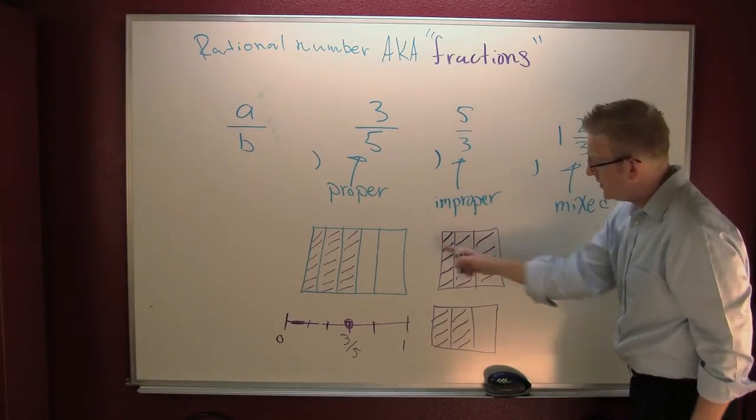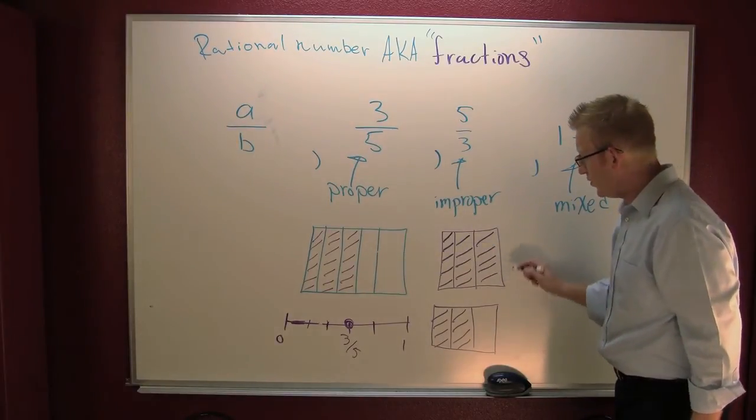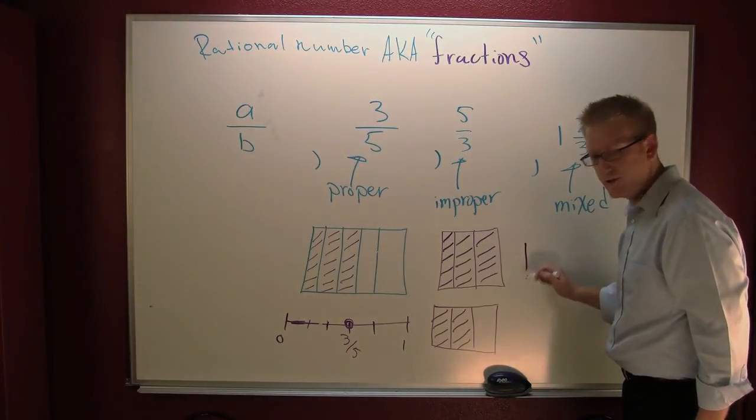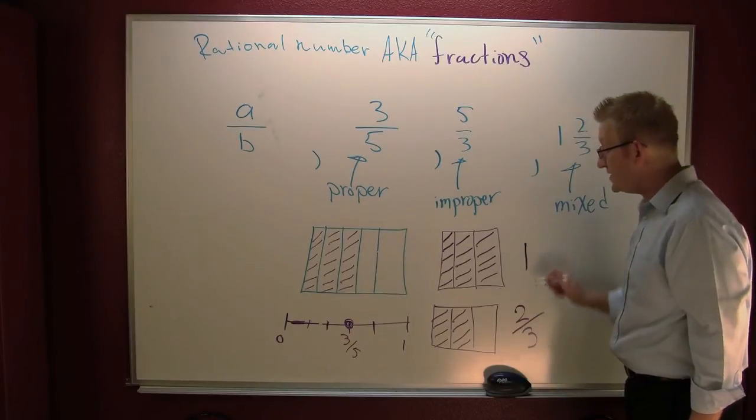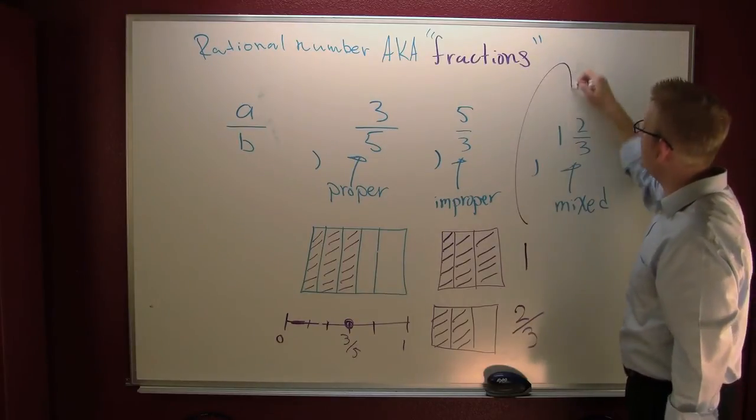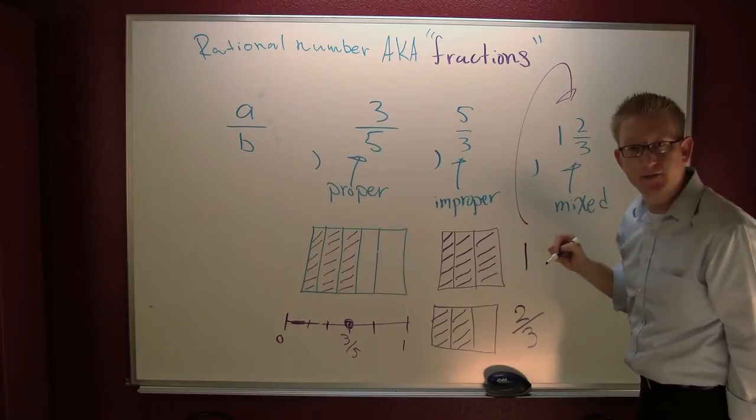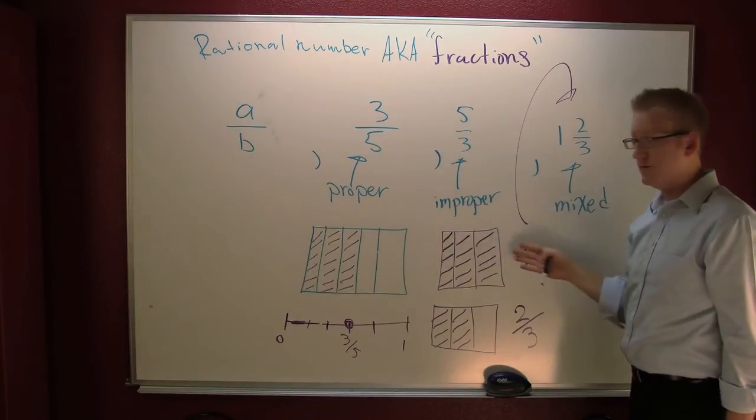If we look at this, this is 3 out of 3 or 1 goods. And this is 2 thirds. And this is 2 thirds. Which incidentally would be how you would represent 1 and 2 thirds using bars.